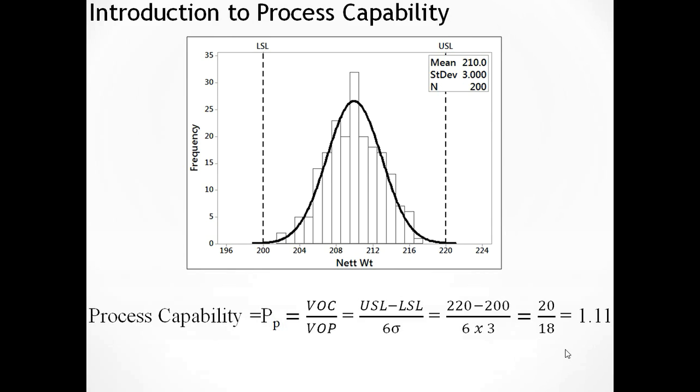A quick mathematical analysis here will tell you that if the PP equals 1 then your process just about fits within your spec limits. If your PP is greater than 1 your process fits within your spec limits and you shouldn't be making defects. If your PP is less than 1 then your process doesn't fit within the spec limits and you're making defects.